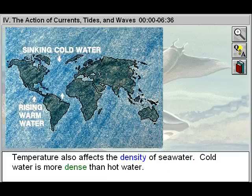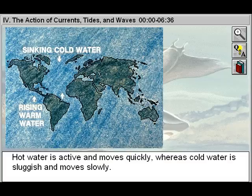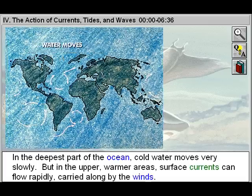Temperature also affects the density of seawater. Cold water is more dense than hot water. Hot water is active and moves quickly, whereas cold water is sluggish and moves slowly. In the deepest part of the ocean, cold water moves very slowly.